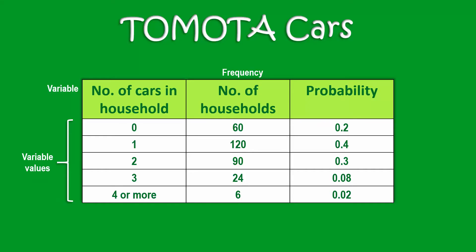Obviously it's physically difficult to interview each of the several million households in the state, so we use probability. The probability column for the various values in the table depicts the probability distribution.